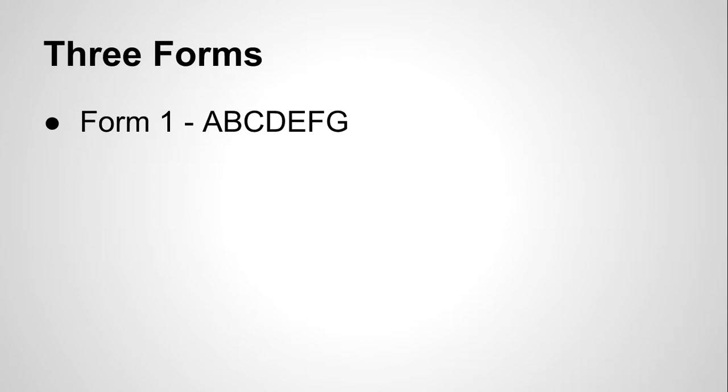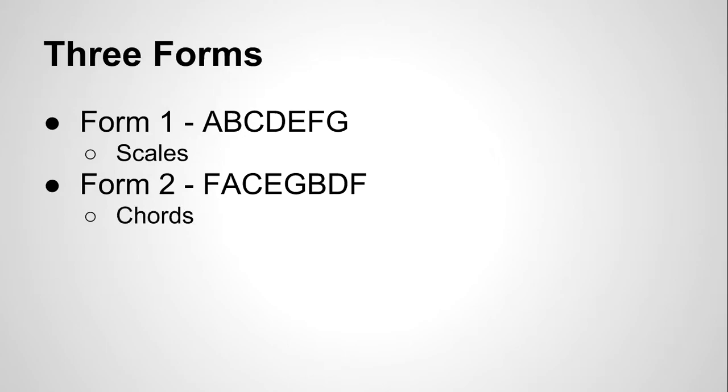So our three forms: first form is consecutive for scales, second form is every other and that's for chords, form three is for keys. But if you also remember, form one is seconds and sevenths, form two is thirds and sixths, and form three for intervals is fourths and fifths.